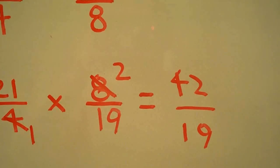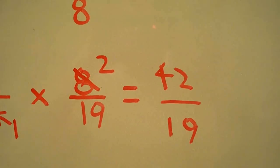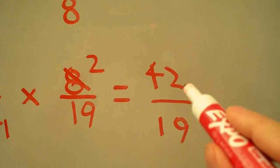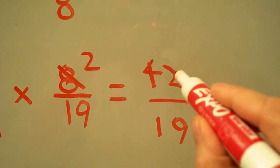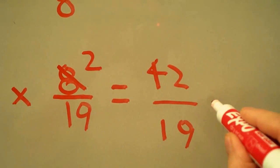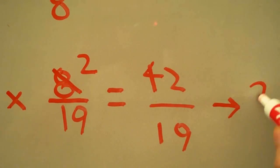Now most of the time you're asked to keep your answers in mixed number form. If you're asked to do this, to change 42/19 to a mixed number, we ask ourselves how many times does 19 go into 42 without going over? And that would be 2 times, since 19 times 2 is 38.